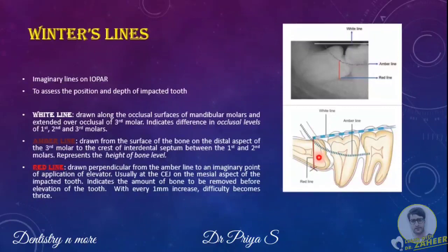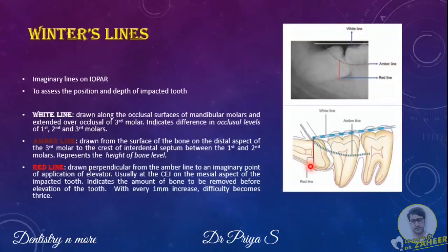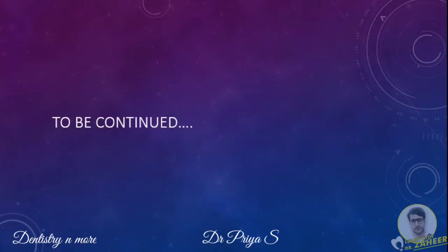The difficulty encountered in removing a particular tooth can be assessed using the red line. With each increase in the length of the red line by 1 mm, the impacted tooth becomes 3 times more difficult to remove, as defined by Hope. If the red line is less than 5 mm, the tooth can be removed under local anesthesia; otherwise, sedation would be more appropriate. That's all for this video — the rest of the questions will be continued in the subsequent videos. Thank you.